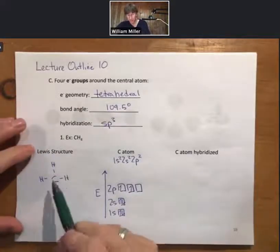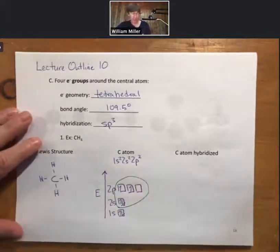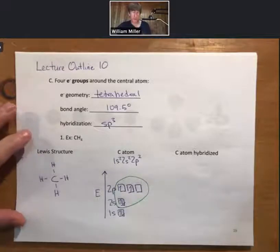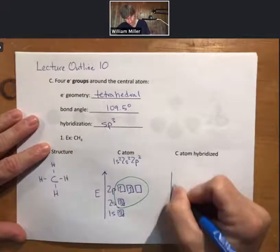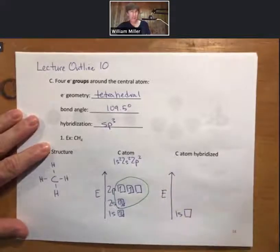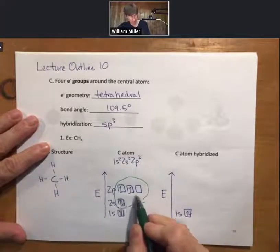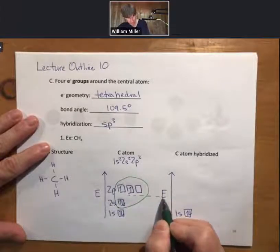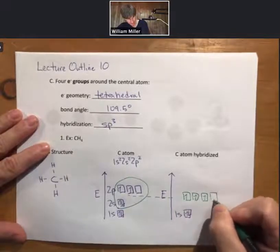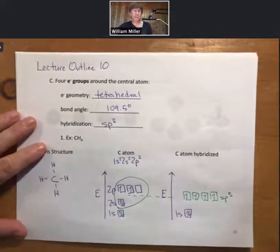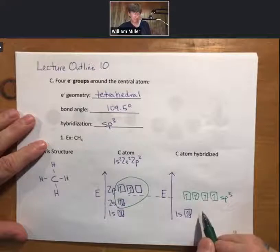We know the answer already: there are four electron groups, so there are four hybridized orbitals. Since there will be four bonds, we are circling four electrons. Nothing changes about the 1s. The 2s and 2p are at the average — mostly 2p at this point. The result is four sp3 hybridized orbitals, each with one electron in them.